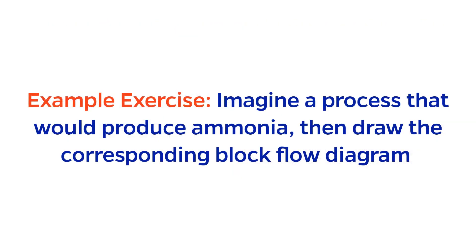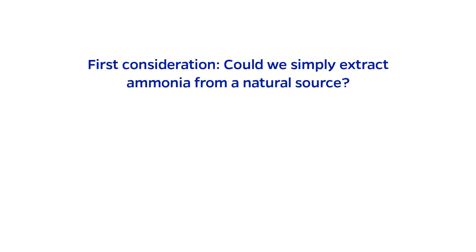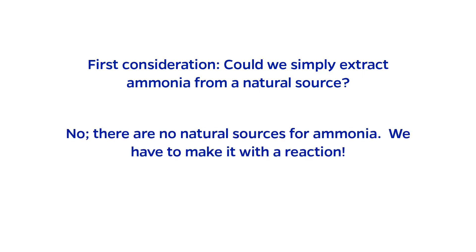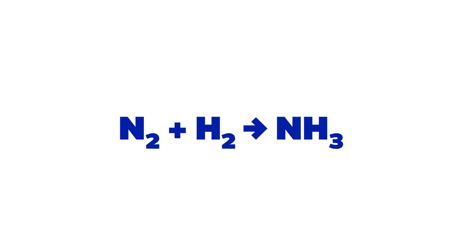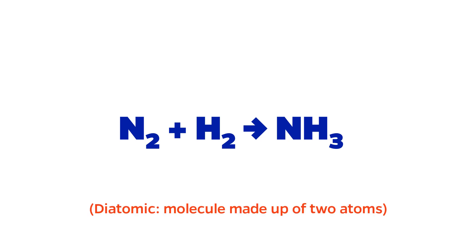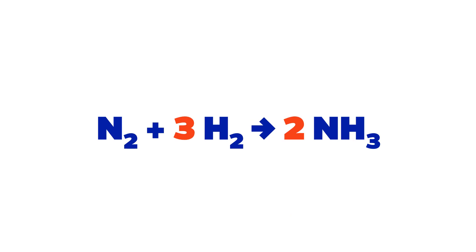Imagine a process to produce ammonia, then draw the corresponding block flow diagram. The first thing we might consider is whether or not ammonia is found anywhere in nature — maybe we can extract it from a plant or something. However, ammonia has the chemical formula NH3, and unfortunately it is not found anywhere in nature, so we have to make it with a chemical reaction. Perhaps the simplest possibility is reacting nitrogen and hydrogen gases, which are both diatomics. Balancing the chemical reaction tells us that we will need three times the amount of hydrogen compared to nitrogen, but these are details for later episodes.